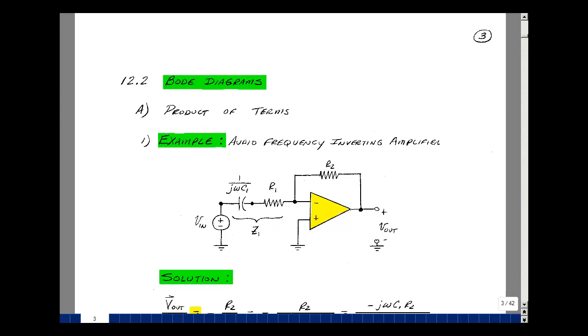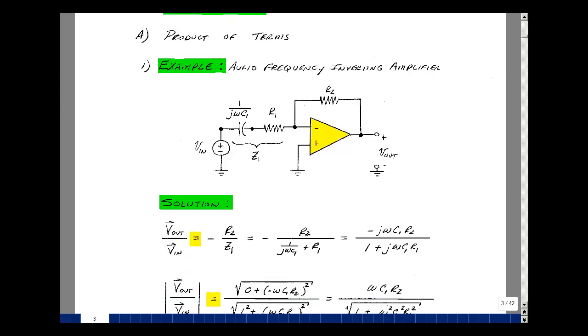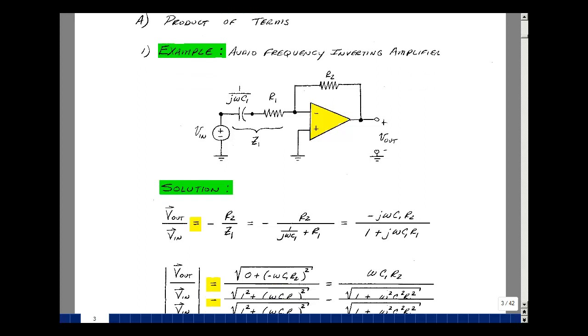Let's solve for the transfer function of Vout over Vin. While we've done this before with resistive circuits, let's just use the previous results and replace our resistive terms by an impedance. In other words, the output over the input would be minus Z2 over Z1.